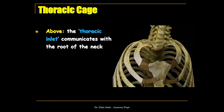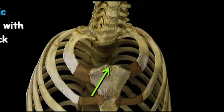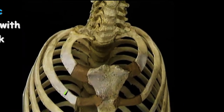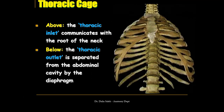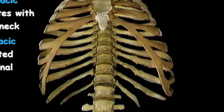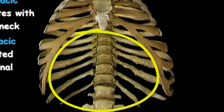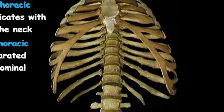The boundaries of the thoracic cage: above, we have what is called the thoracic inlet, which communicates with the root of the neck. It is bounded by the upper border of the manubrium sternum, the first costal cartilage, the first rib, and the first thoracic vertebra. Below, this large aperture is called the thoracic outlet, and it is separated from the abdominal cavity by the sheet-like muscle called the diaphragm.